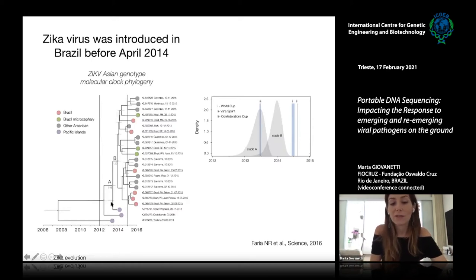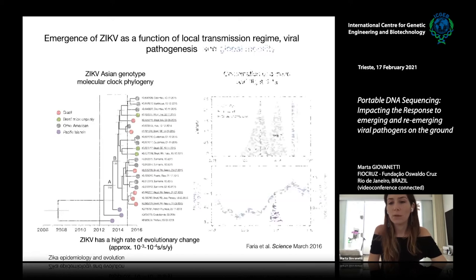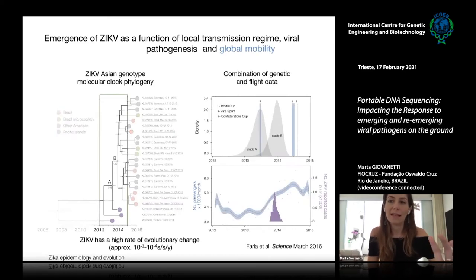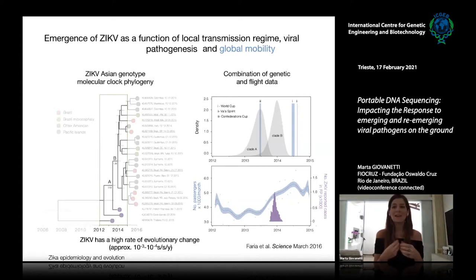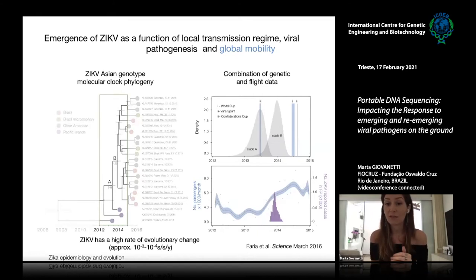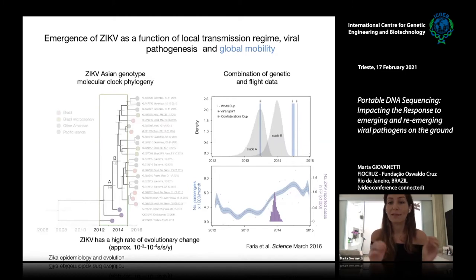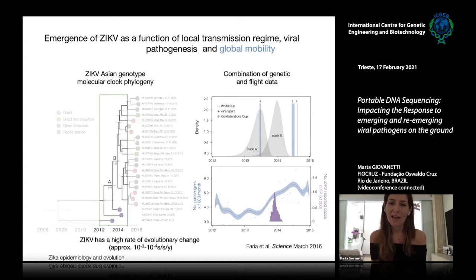We dated the introduction event of Zika virus in the Americas back to 2014, combining genomic and epidemiological data to identify events that may have enabled its introduction into Brazil. We found that two events — the World Cup and the Confederation Cup — may have been related to the introduction of this novel virus in Brazil and the Americas due to globalization and global mobility.